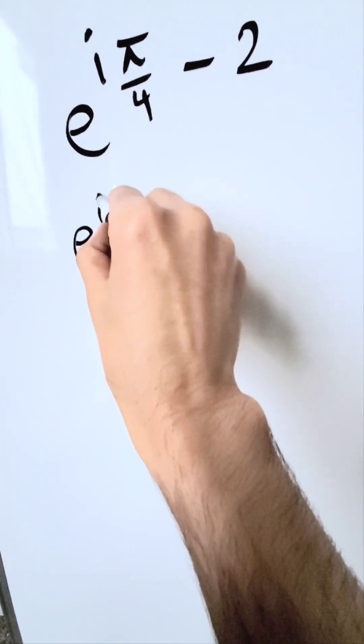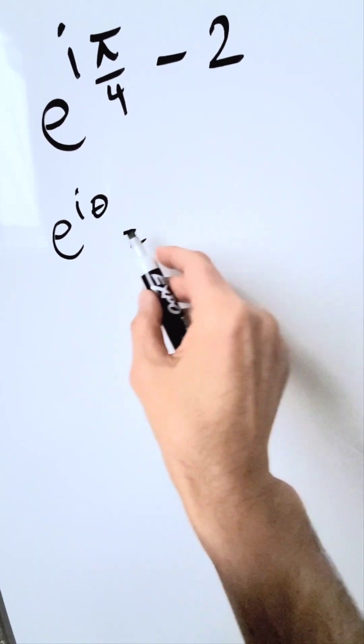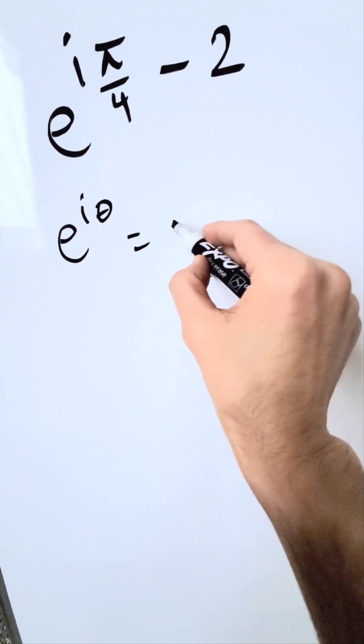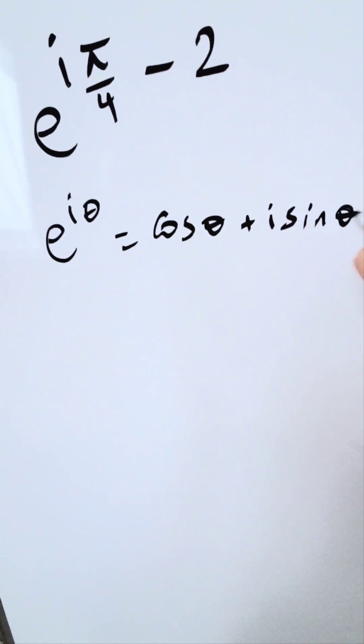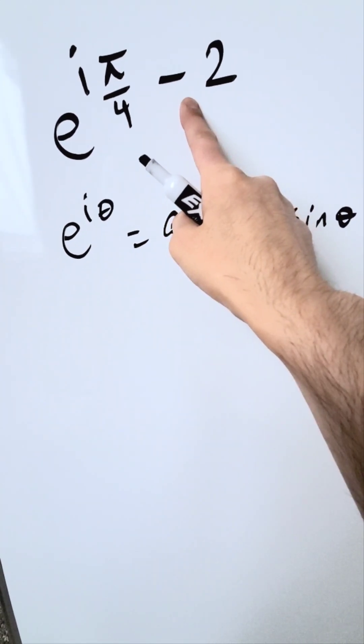Think about this identity, e exponent i theta equals, by means of Euler's identity, cosine theta plus i sine theta. This is what we will be using, but think about laws of exponents.